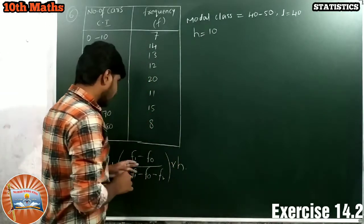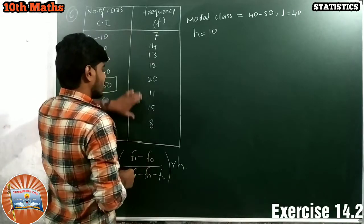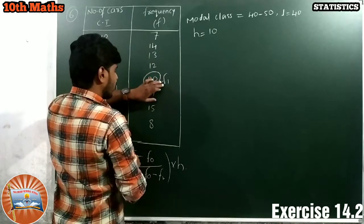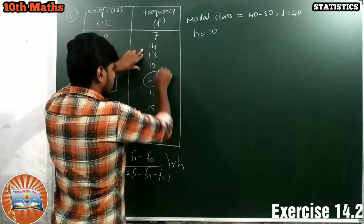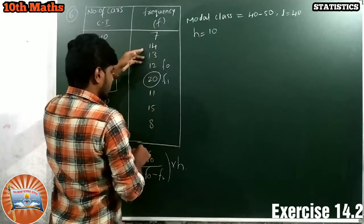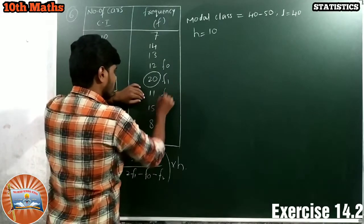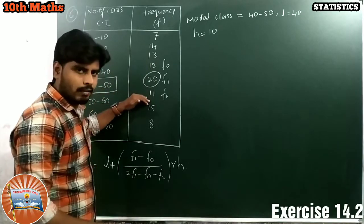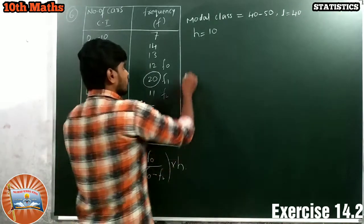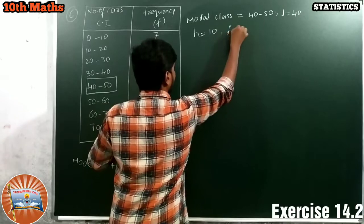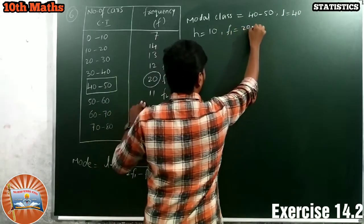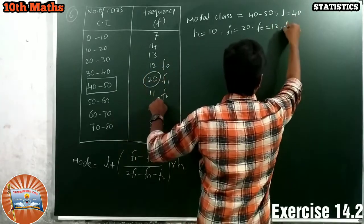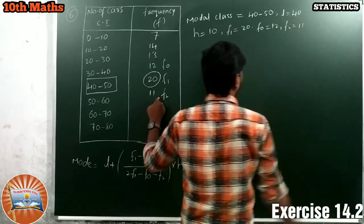The highest frequency is called F1. This is the highest frequency, that is F1. The preceding frequency, this is F0. The succeeding frequency, this is F2. Preceding frequency is F0, succeeding frequency is 11, that is F2. F1 equals 20, F0 equals 12, and F2 equals 11.